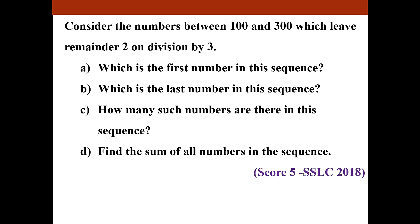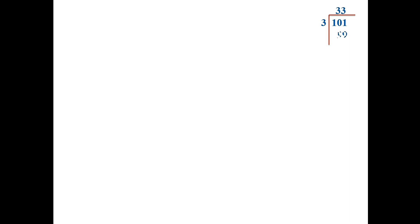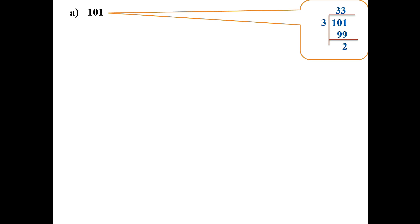Starting from 101, we check whether it satisfies the condition. Dividing 101 by 3: 33 threes are 99, and the remainder is 2. Therefore, the first number in this sequence is 101.